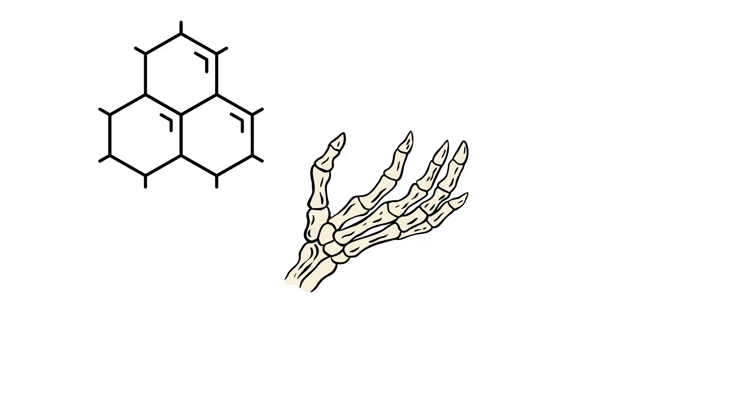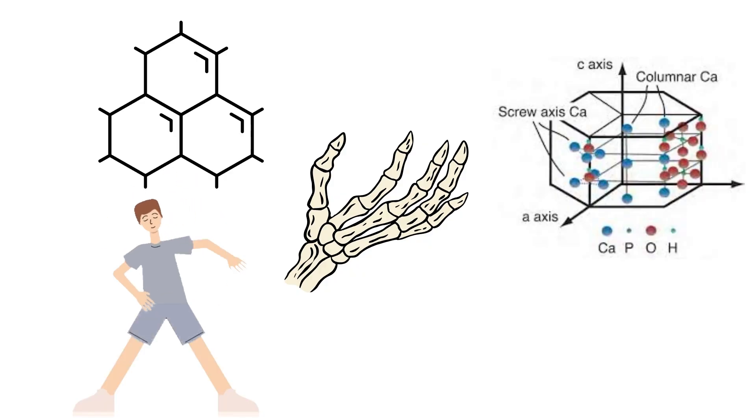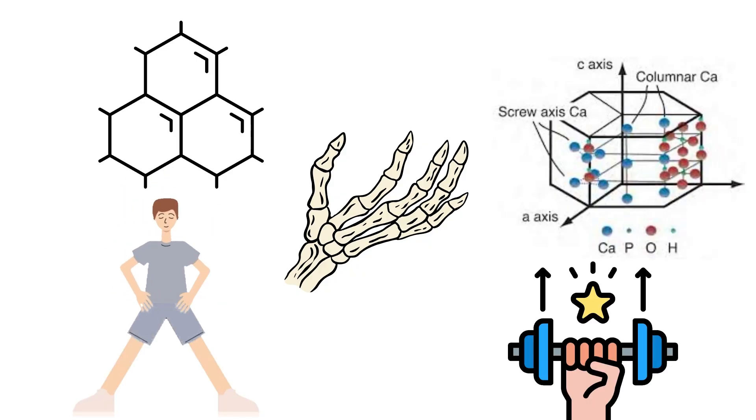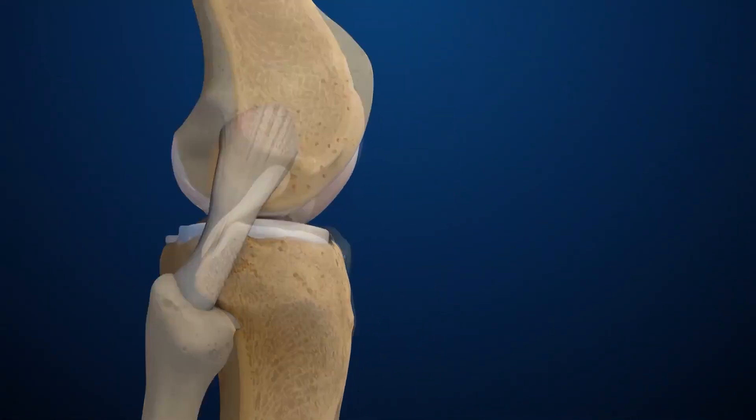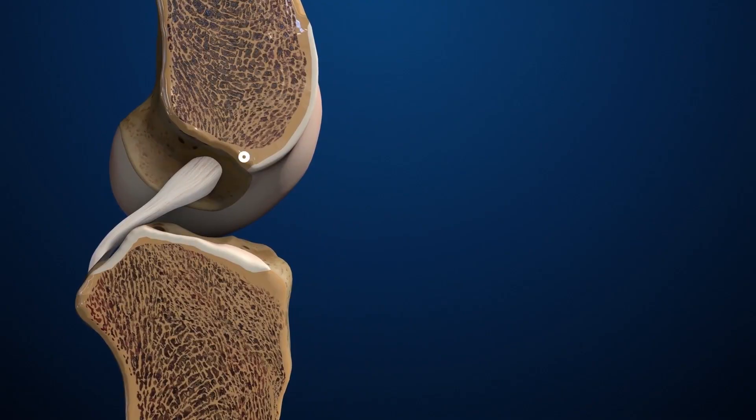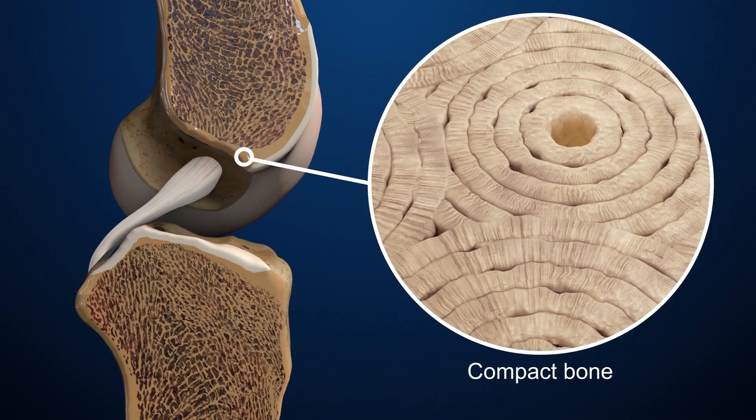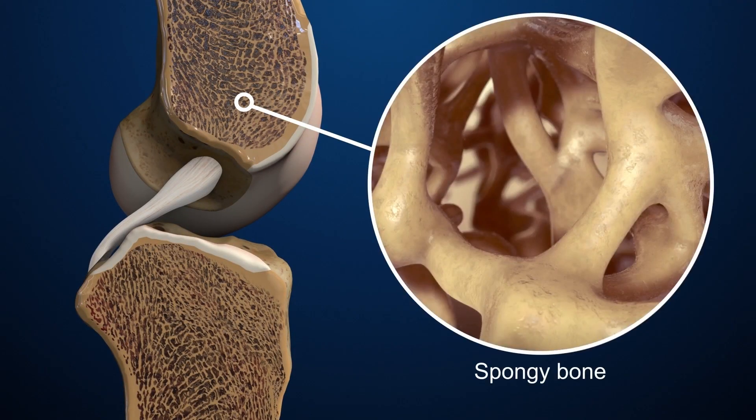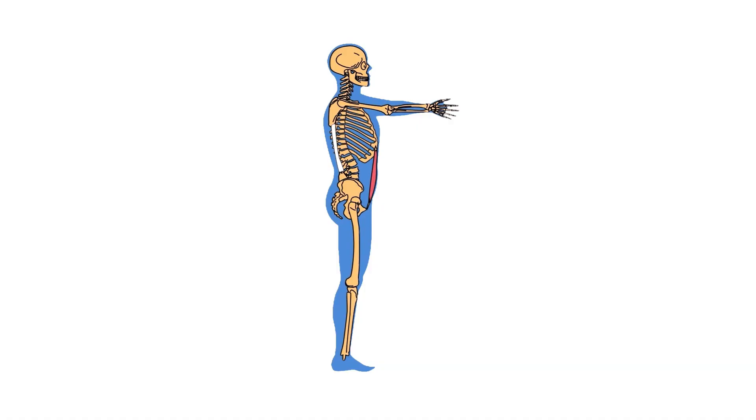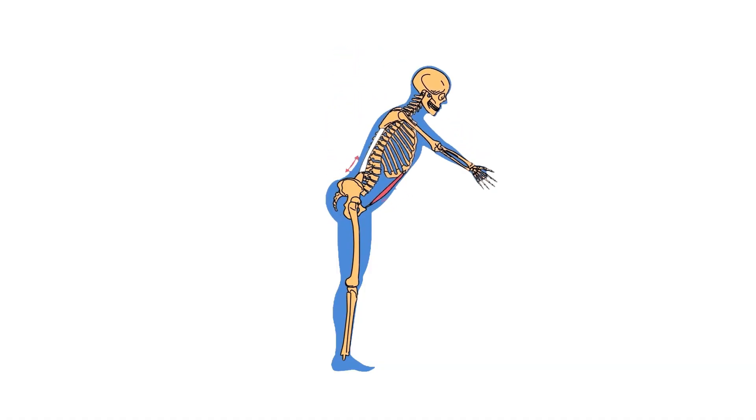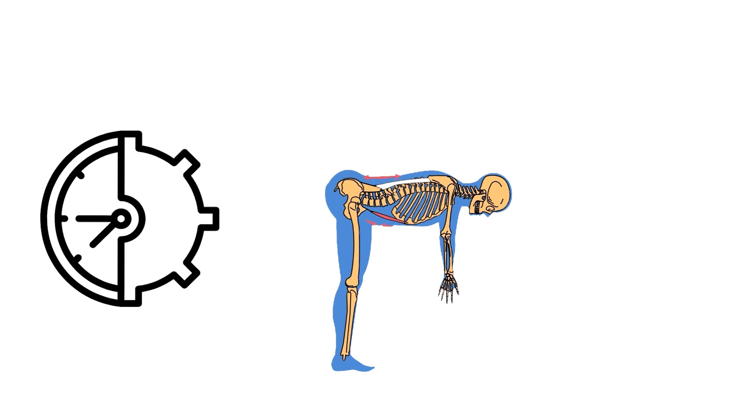At the microscopic level, bones are full of trabecular scaffolding, a honeycomb-like network that distributes stress like shock absorbers. So even though your skeleton feels fragile when you stub your toe, it's actually one of the most efficient structures ever, a miracle of strength, flexibility, and self-repair.